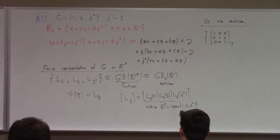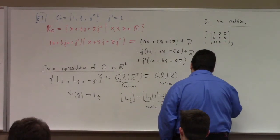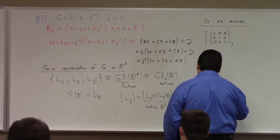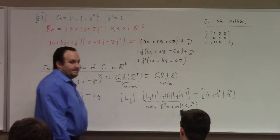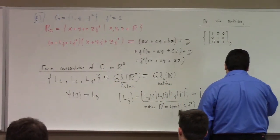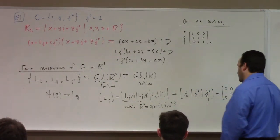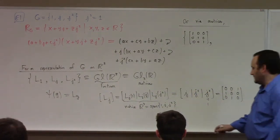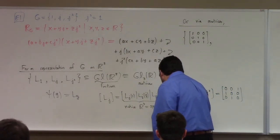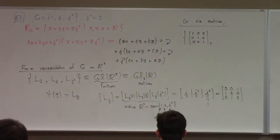So the first column is J, the second is J squared, and the third is J cubed — which equals 1. In E1, E2, E3 notation: J is 0, 1, 0; J squared is 0, 0, 1; and J cubed equals 1, so that's 1, 0, 0. So E1 is 1, E2 is J, E3 is J squared. Under that identification, there's the matrix of left multiplication by J.